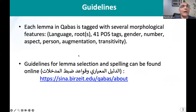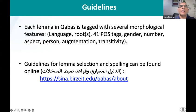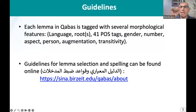The guidelines we used to build Qabas: each lemma in Qabas is tagged with several tags. We have the language, which can be MSA, classical Arabic, foreign, Palestinian, Egyptian, Moroccan, Algerian, and so on. We have 41 POS tags, the gender of the word, the number, the aspect, person, augmentation, transitivity, and so on. These are the lemma tags; the lemma itself should not have such grammatical or morphological tags at the token level, but this is the state of the lemma.